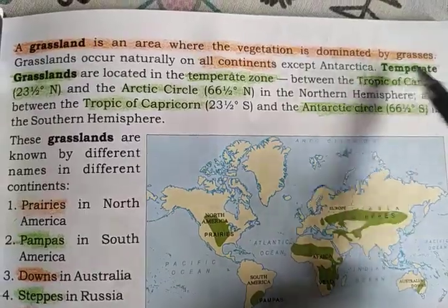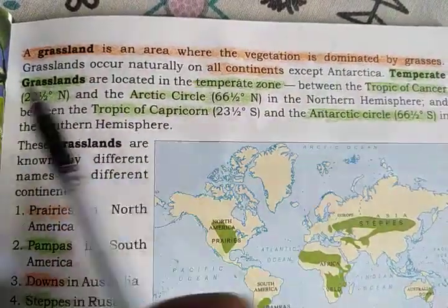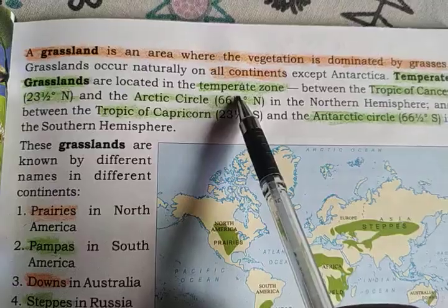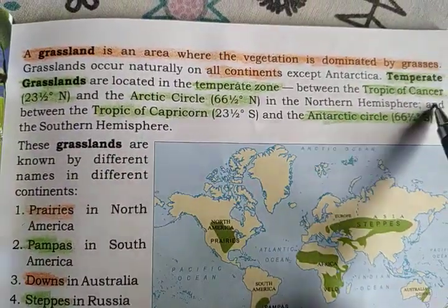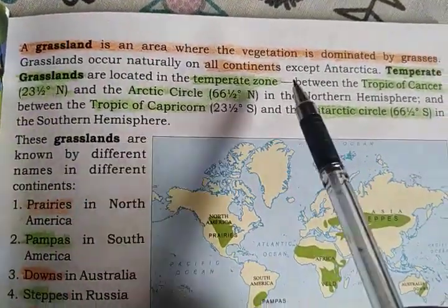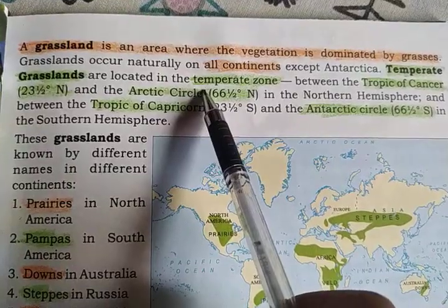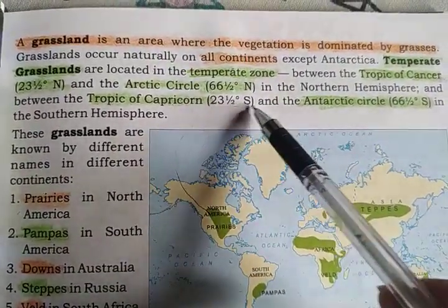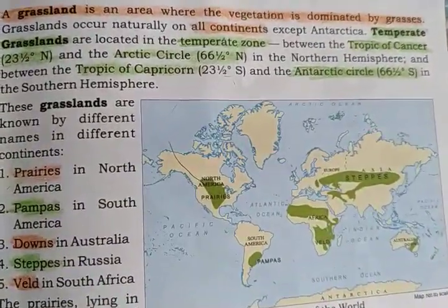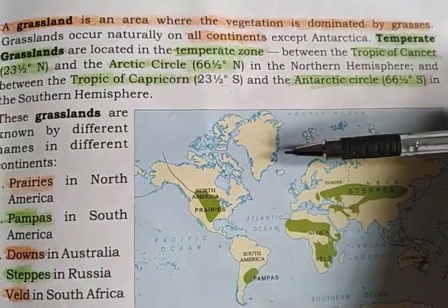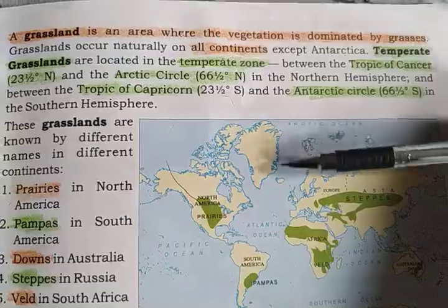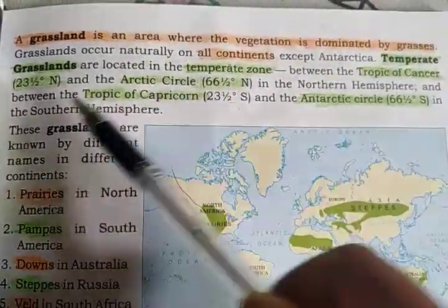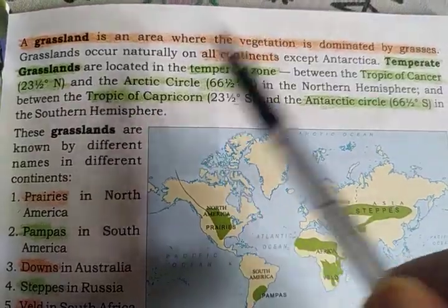Grasslands mostly occur in the temperate zone. Temperate grasslands are located in the temperate zone. The temperate zone is located near the equator — it is the torrid zone — and between the Tropic of Cancer and Tropic of Capricorn we have the temperate zone.